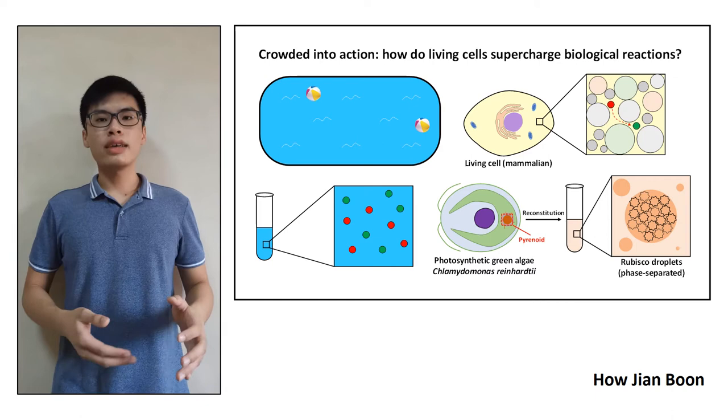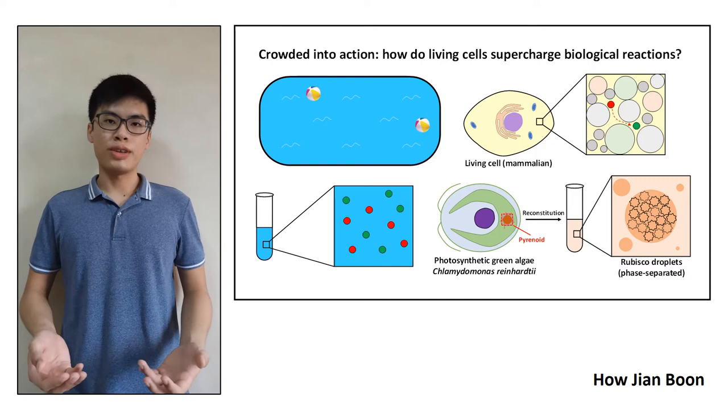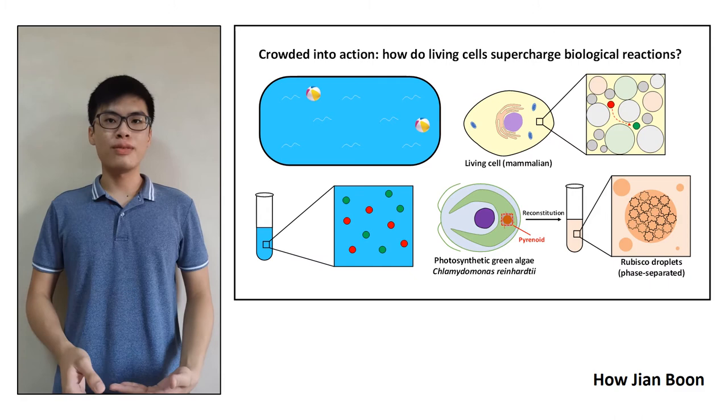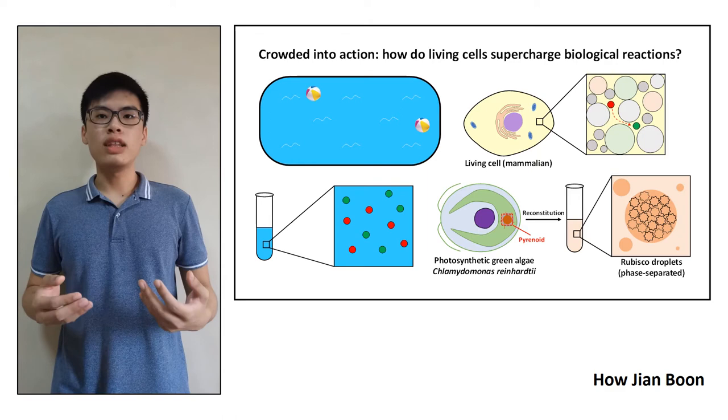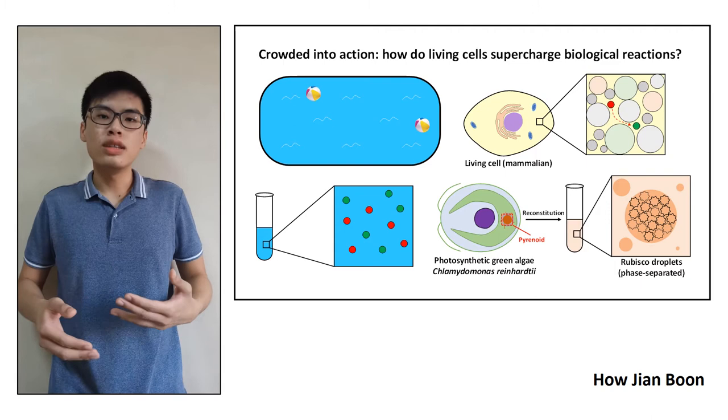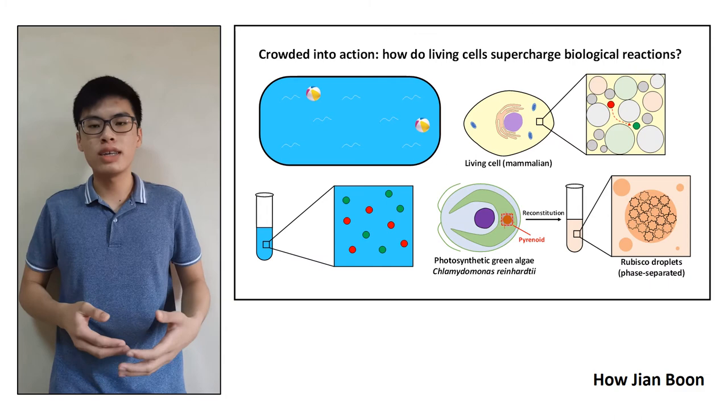Now, the living cell has yet another trick. Recently, it was discovered that certain proteins can phase separate, forming liquid droplets both rich and crowded with a specific protein. My project involves such liquid droplets, specifically those that mainly contain the carbon dioxide-fixing enzyme rubisco. Green algae produces these rubisco droplets in what we call pyrenoids in order to maximize their photosynthetic output.